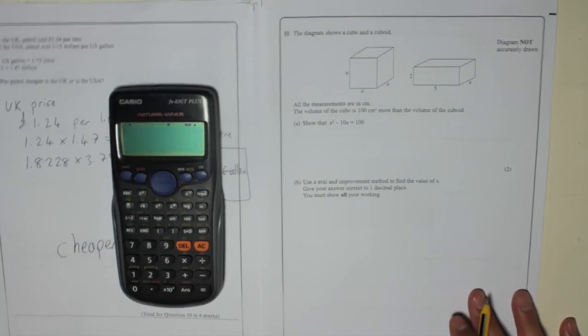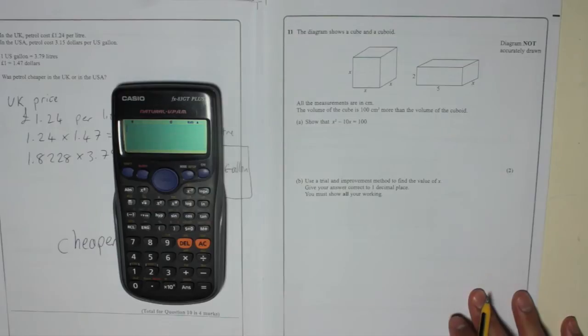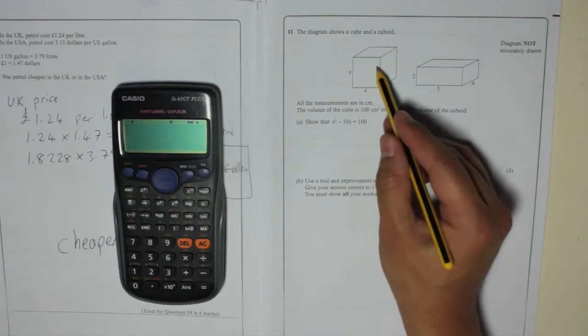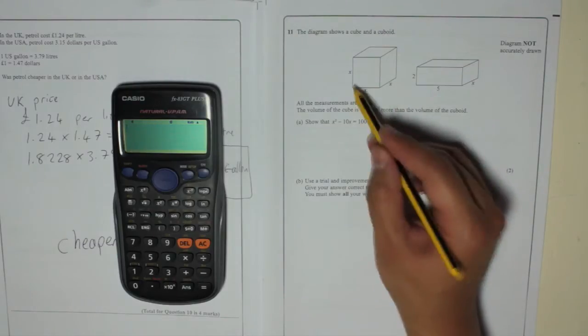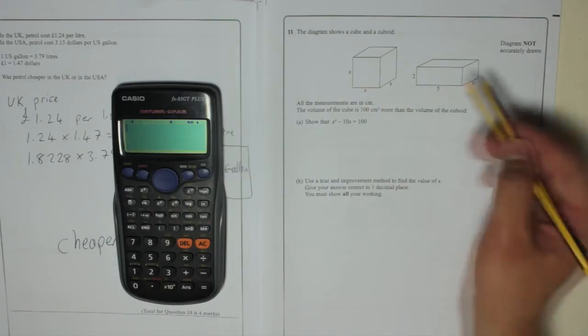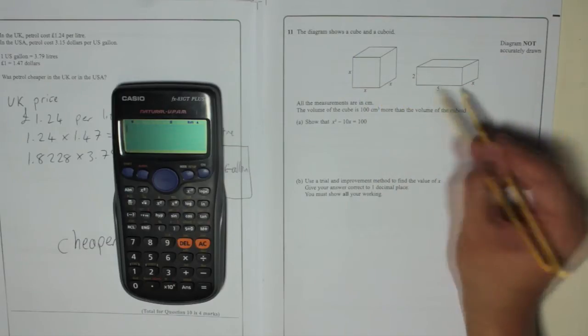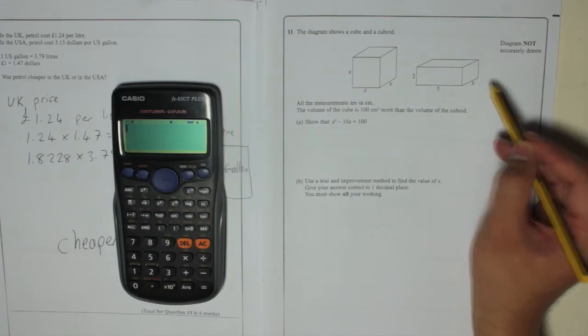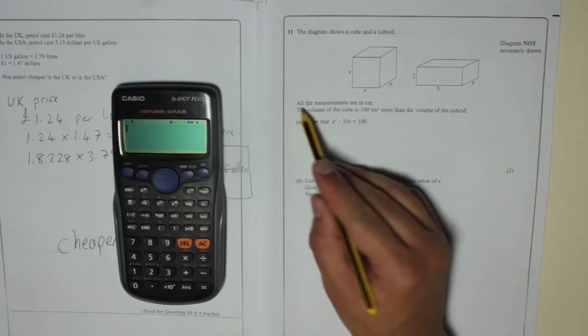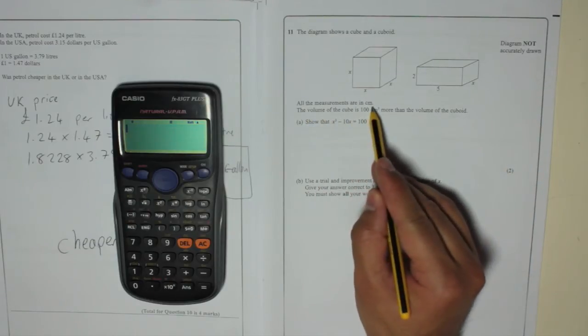Question 11. The diagram shows a cube and a cuboid. So there's a cube. Every length, remember, is the same. So X and X and X. Here's a cuboid. Two high, five width and X going backwards. Depth.